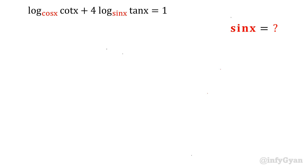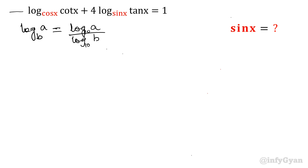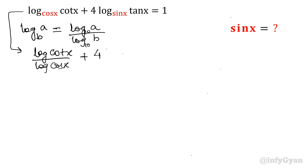Let's start by applying the change of base property of logarithm: log a base b can be written as log a over log b, with any common base. Applying that property, the equation will be written as log(cot x) over log(cos x) plus 4 times log(tan x) over log(sin x) equal to 1.